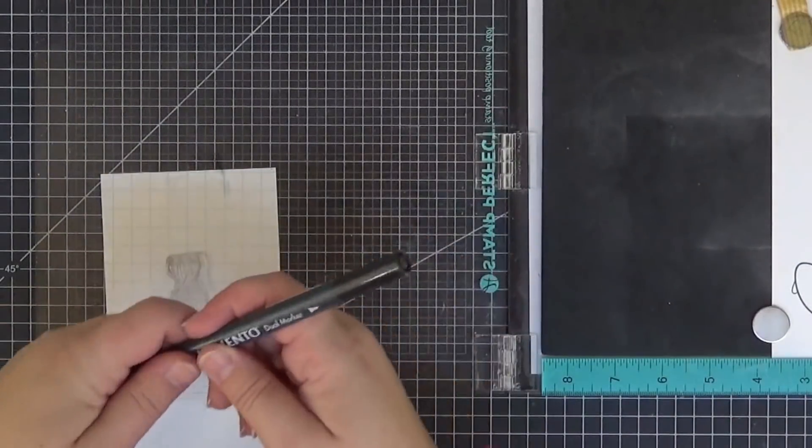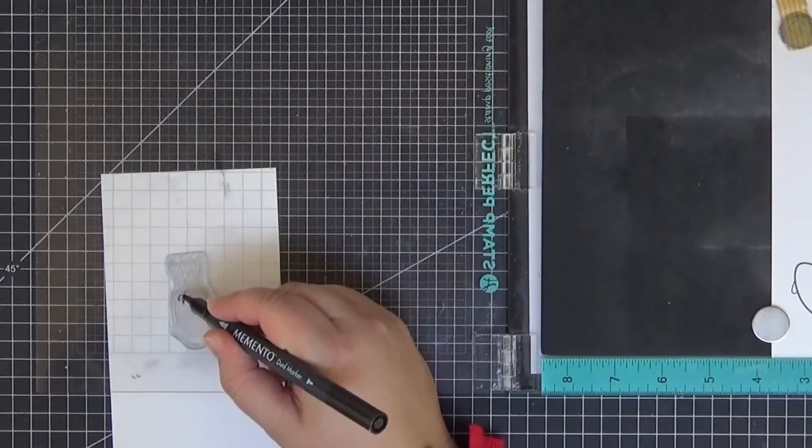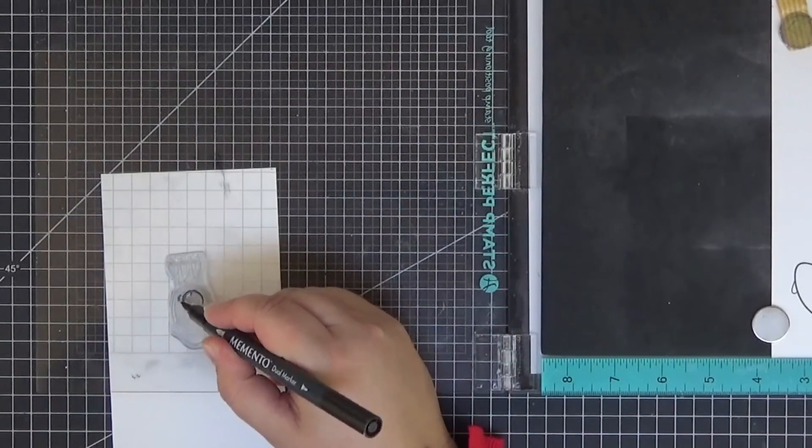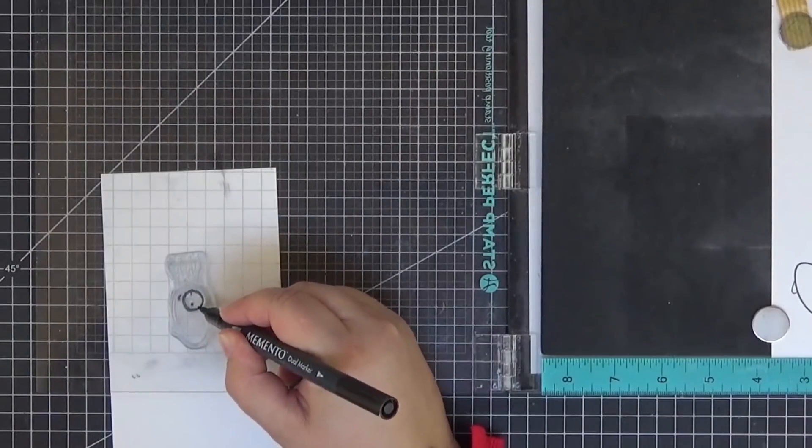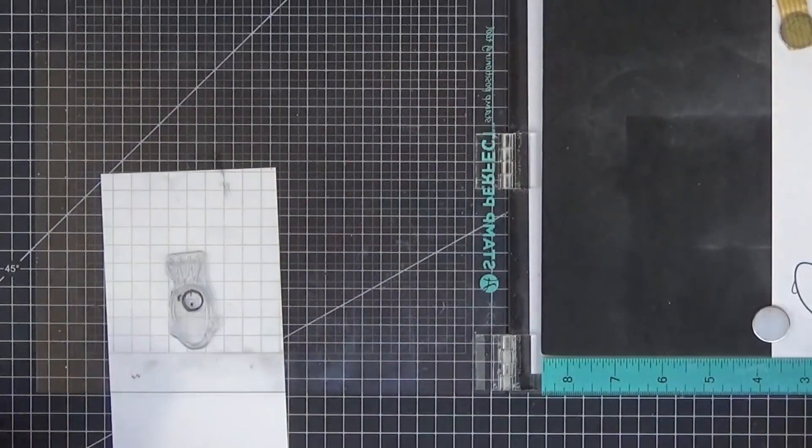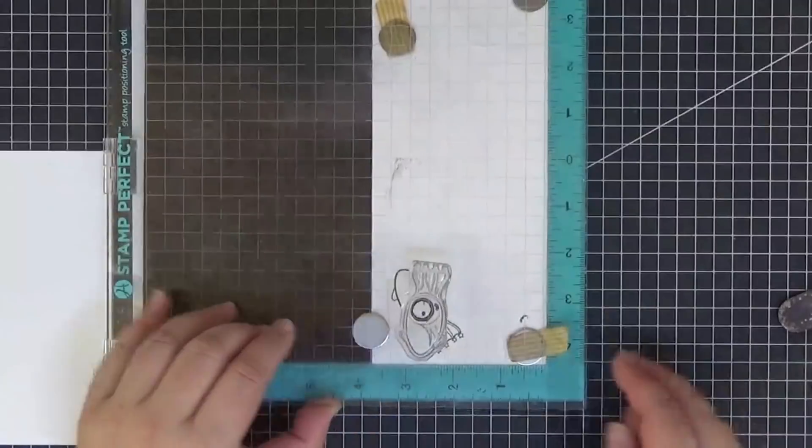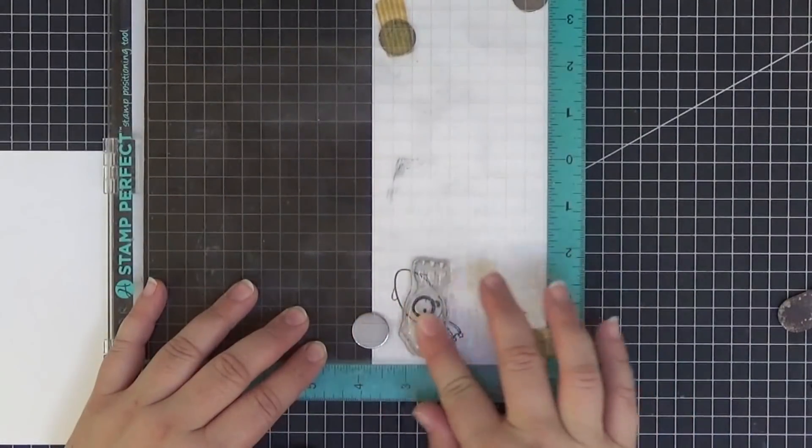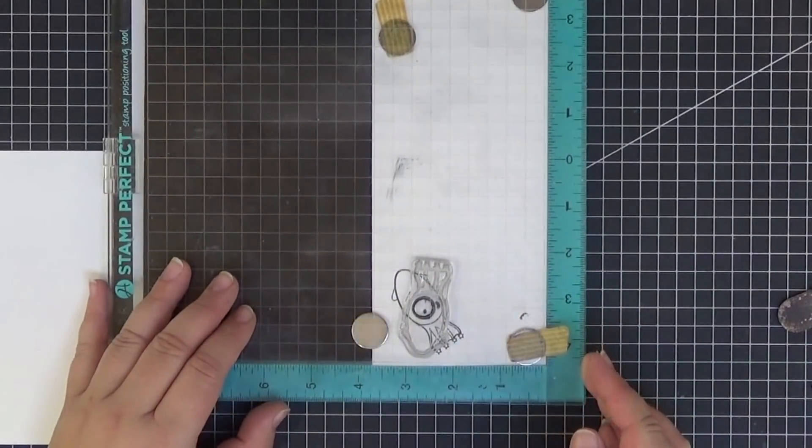I'm just placing a strip of paper so you can see what I'm doing. I'm using a Memento marker to just color the eye and that cute little smile. I was lucky and it turned out perfectly on the first try.